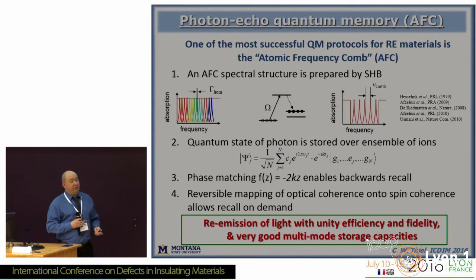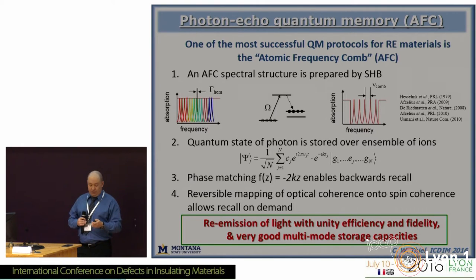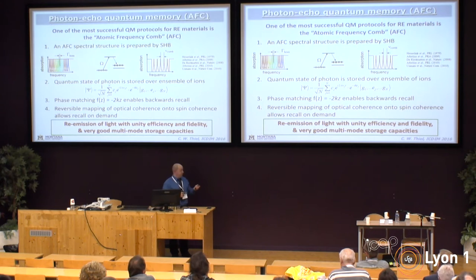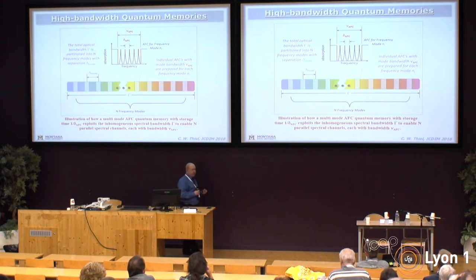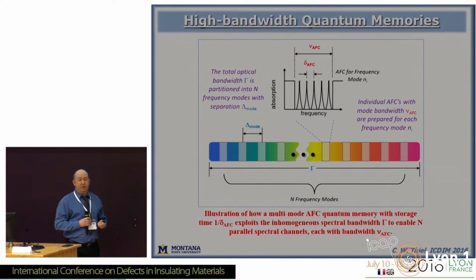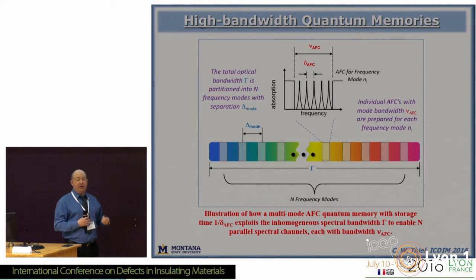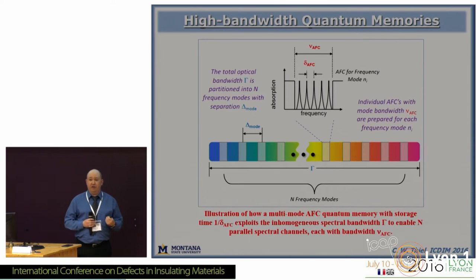By setting up phase matching, you can make the probability of absorbing a single photon unity, and also make the probability of recalling the photon unity, preserving all quantum information stored on the photon as well. To do this in practice with high information handling capacity, you split the inhomogeneous line up into a whole series of channels, create individual atomic frequency combs in each channel, and have a whole series of independent channels interacting with spectrally distinct entangled photons. This allows you to generate a very large practical information handling and communication capacity.